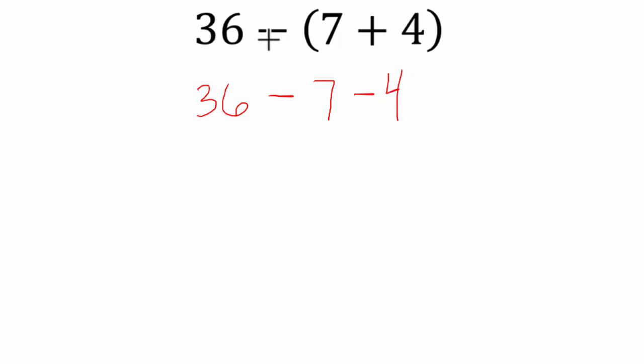In that way we can use the distributive property here by distributing this subtraction sign, which is the equivalent of distributing a negative 1, to both the 7 and the 4. Negative 1 times 7 is negative 7 and negative 1 times 4 is negative 4.